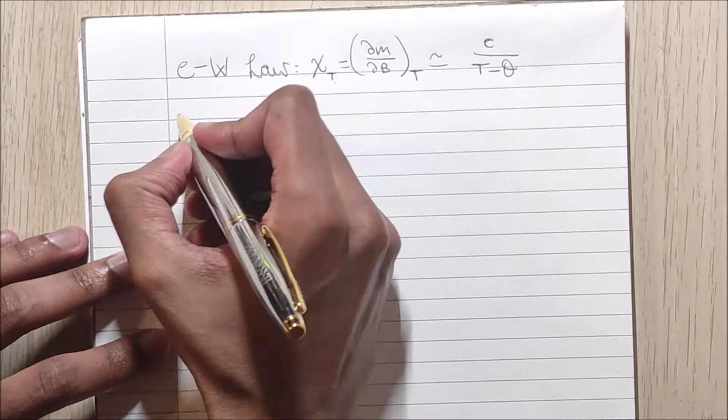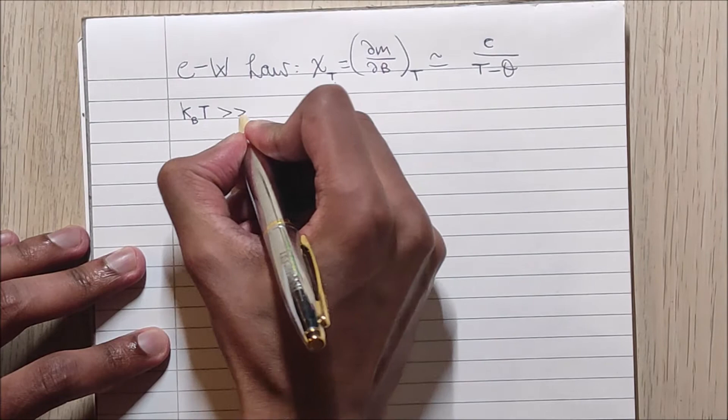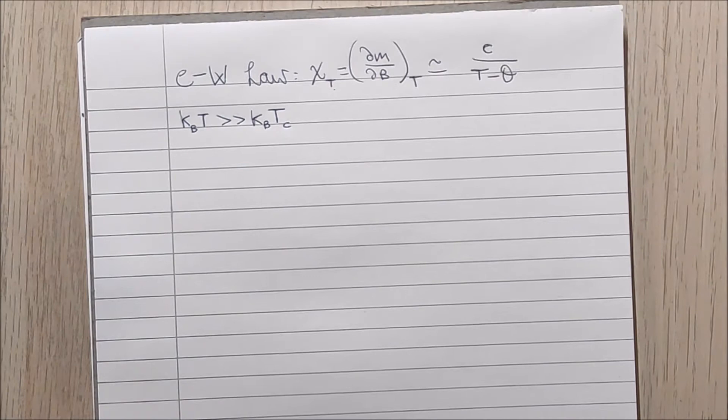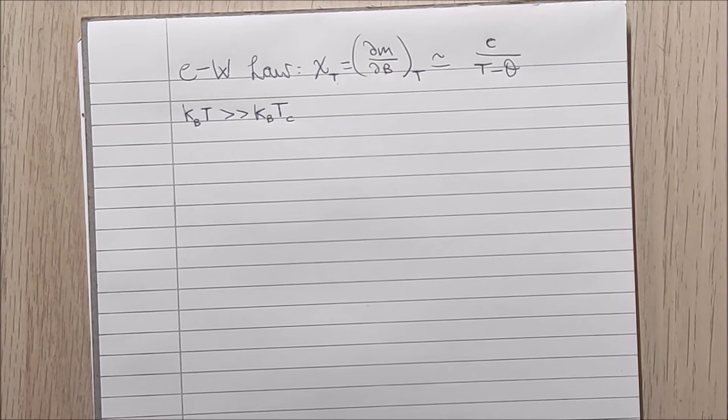Firstly, we will take KBT to be much greater than KB multiplied by T subscript C, which is what we will use to denote the critical temperature of the system.